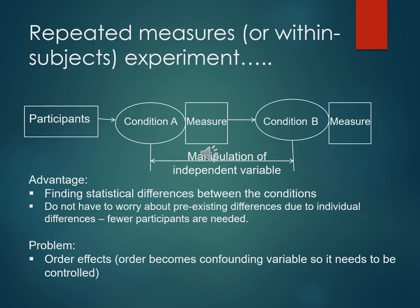However, there is a big disadvantage: order effects. Even though you give the same dependent variable measure after condition A and condition B, condition B occurring after condition A is, strictly speaking, different from condition B happening first. Condition B is actually condition A plus condition B in a strict sense, whereas condition A is just condition A — so it's a confound of order. Repeated measure design controls individual differences but has a disadvantage in controlling situational effects as extraneous variables.